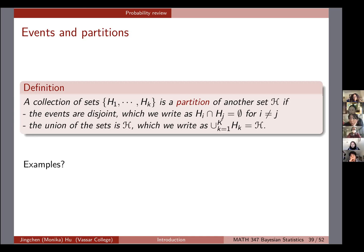Isabella has a really good one. She separated all the days into the days of the week — all the Sundays, all the Mondays, all the Tuesdays, all the Wednesdays — because a day can't be a Sunday and a Monday at the same time, and all days have to be one of them. So if we think about just a week itself, it's a partition because any day has to be one of the seven days and cannot be two days at the same time, and the union of all seven days is a week. You can also generalize that to an infinite number of days.